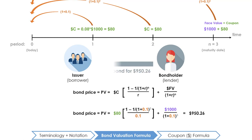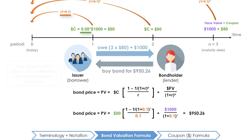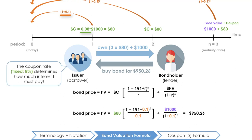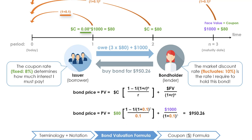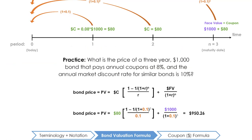In other words, at this market price the bond holder will lend $950.26 to the issuer today in exchange for a promise that the issuer will pay three annual coupons of $80 and a principal of $1,000. Be careful not to confuse the coupon rate and the market rate. The 8% coupon rate is a fixed rate that determines how much interest the issuer must pay, while the 10% market discount rate fluctuates with the market and is the rate of return that the bond holder requires to hold this bond. The relationship between the coupon rate and the market discount rate is an important concept in finance that determines the present value of the bond.